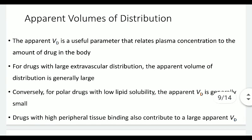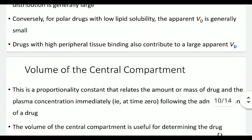Next is the apparent volume of distribution. The apparent volume of distribution (VD) is a useful parameter that relates plasma concentration to the amount of drug in the body. For drugs with larger extravascular distribution, VD is generally large. Conversely, for polar drugs with low lipid solubility, VD is generally small. Hydrophilic drugs have higher apparent VD, while more lipophilic drugs have lower apparent VD. Drugs with high peripheral tissue binding also contribute to a large apparent volume of distribution.